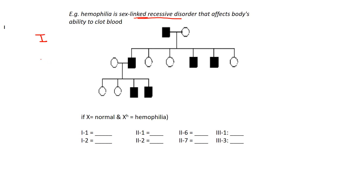Let's put a couple of Roman numerals to show the different generations and then the individuals: one, two — then one, two, three, four, five, six, seven, and so on.